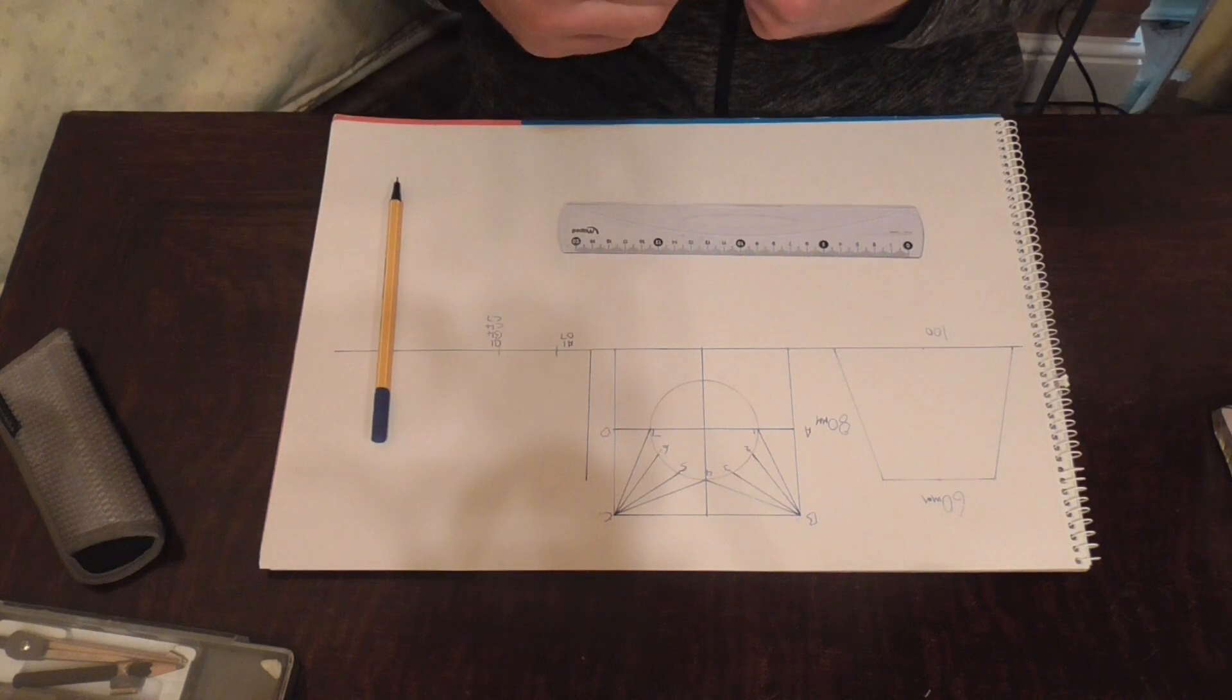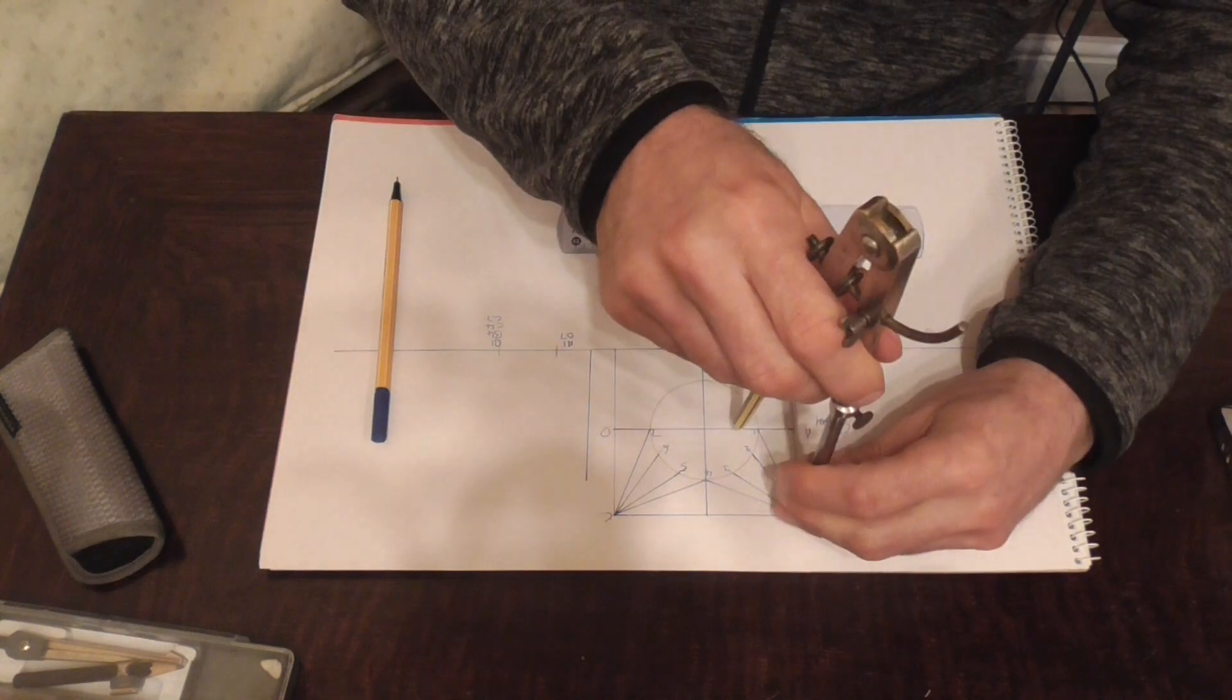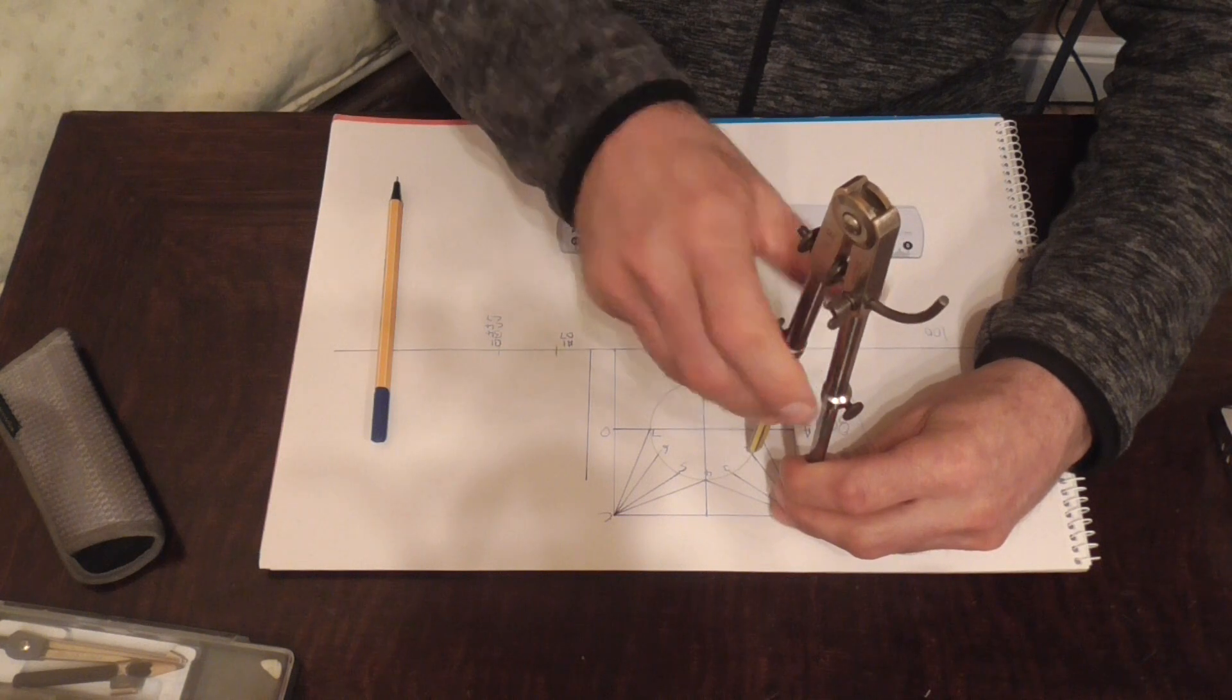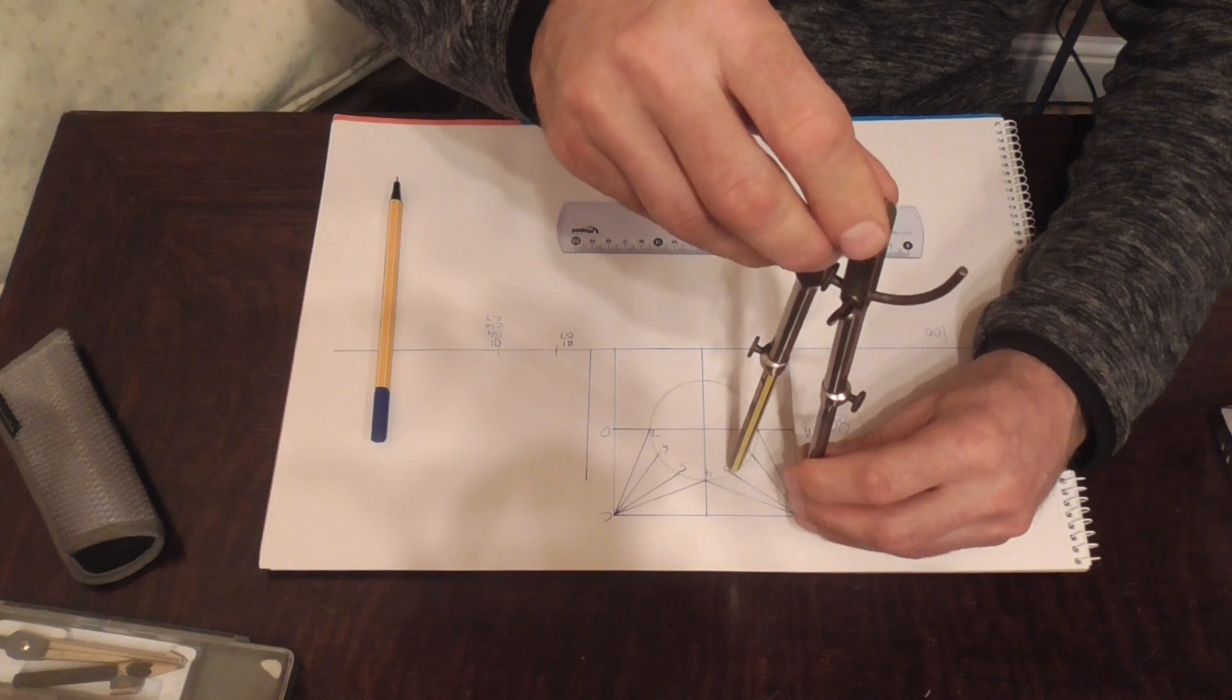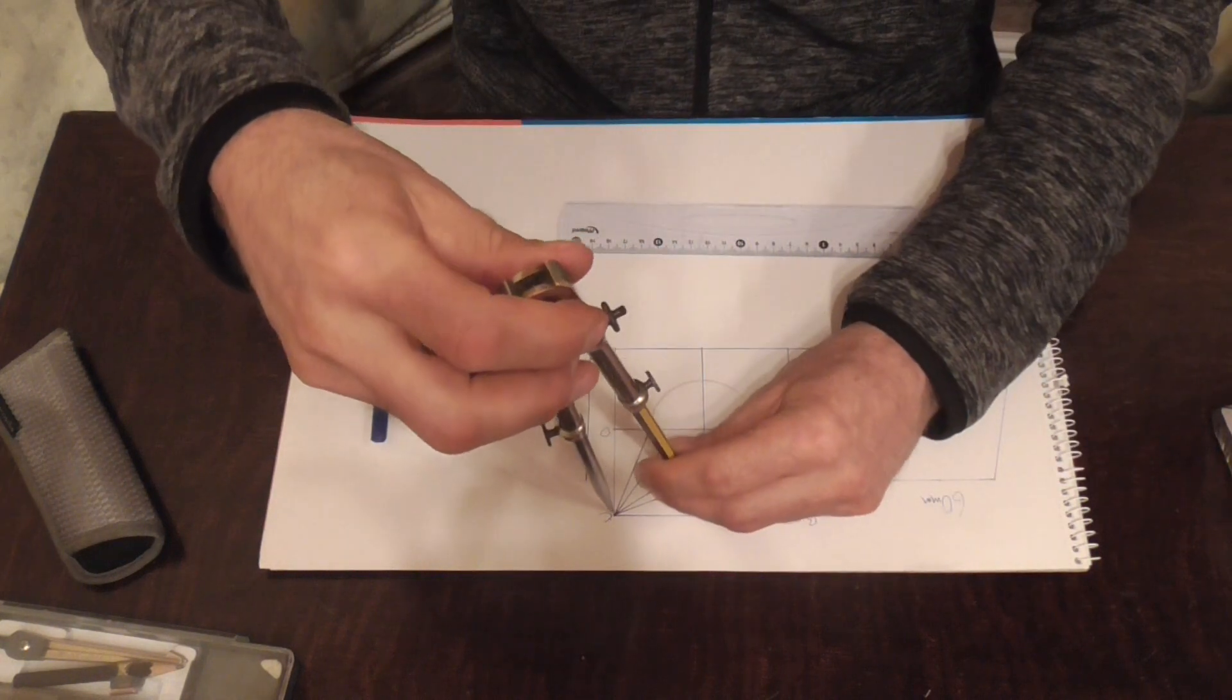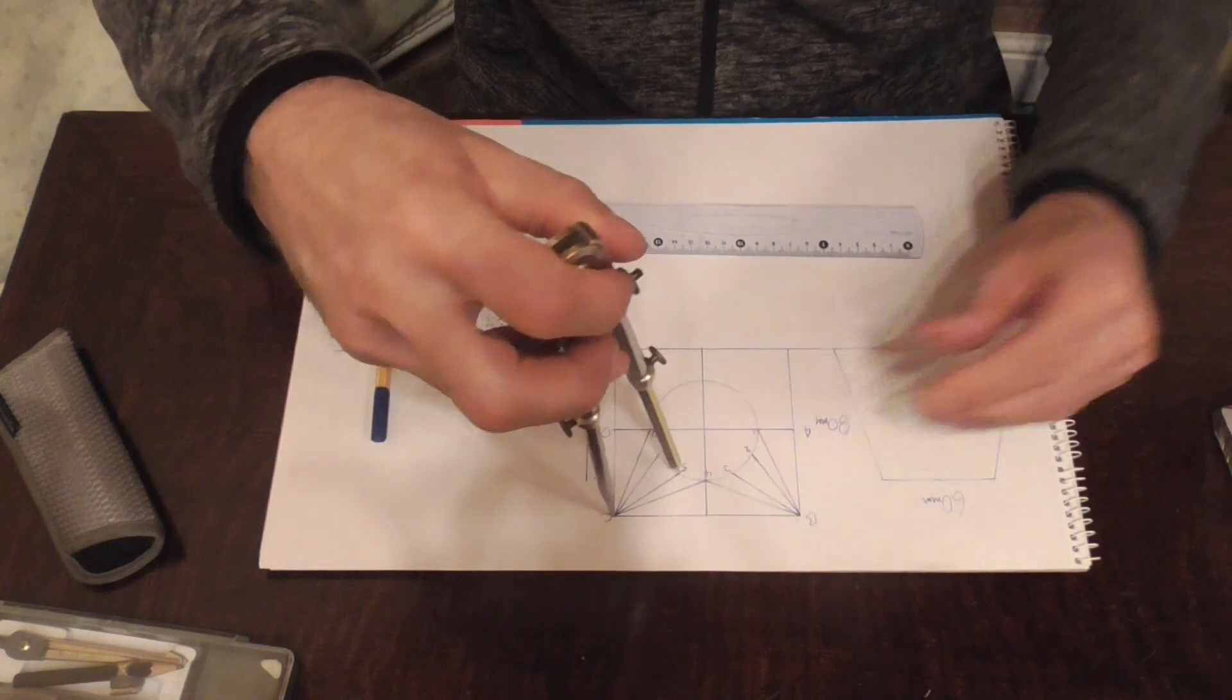Next we need to open our dividers up to B2. B2 and B3 are the same. Same as C5 and C6.